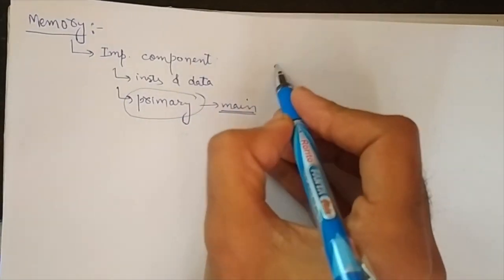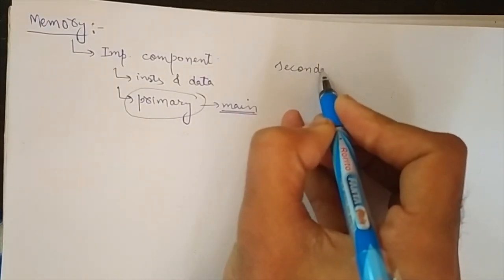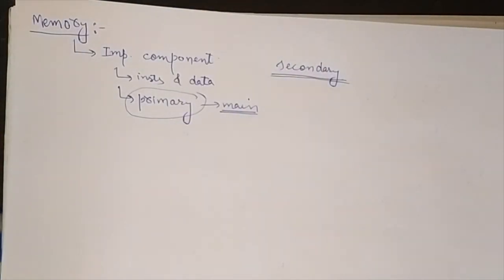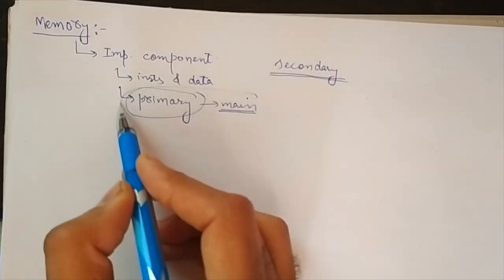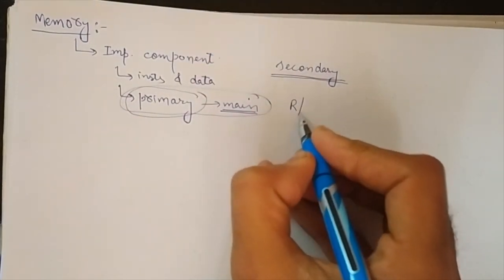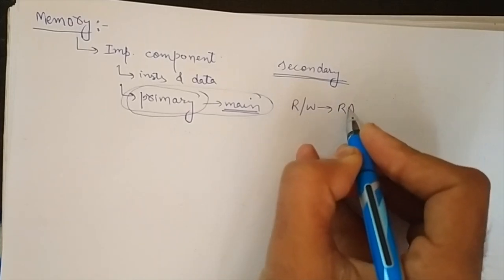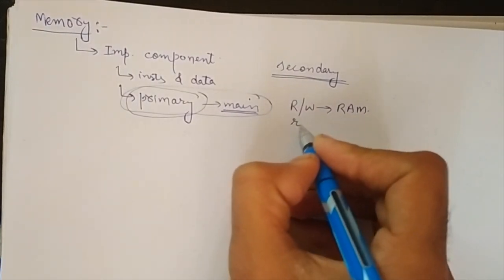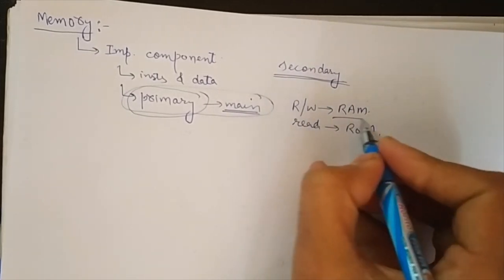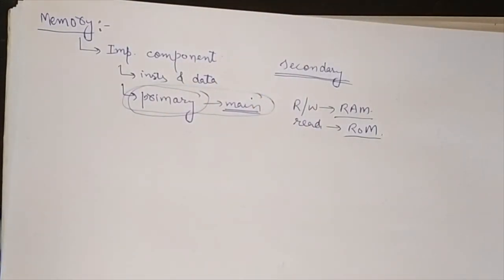We won't be discussing about the secondary memory. Secondary memories, for example, include hard disk, floppy disk, or flash drive. Those are the secondary memories. Our discussion will be primarily focused on the primary memory or main memory. That includes: one is a read-write memory that we also call RAM, and another is a read-only memory that is called ROM. So we will be discussing about RAM and ROM.